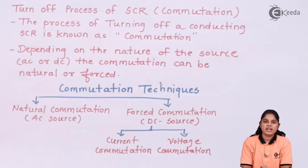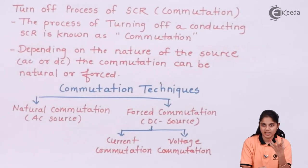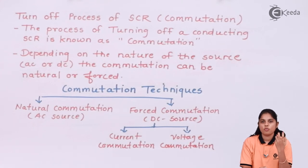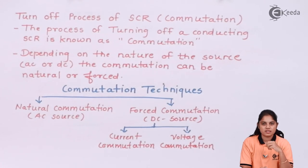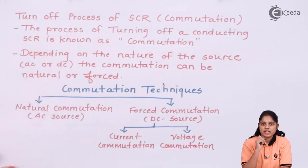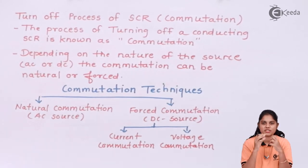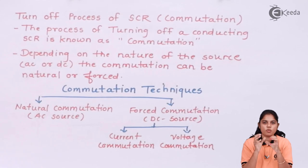If your source is an AC source, it is known as natural commutation. We discussed natural commutation in the previous video — how current can come to the zero point naturally. If we want the SCR to be turned off, the anode-to-cathode current should be zero or below the holding current. Once your current comes below the holding current, your SCR can be turned off. With an AC source, no external circuitry or external device is required to turn off the SCR — it will turn off naturally at one particular point.